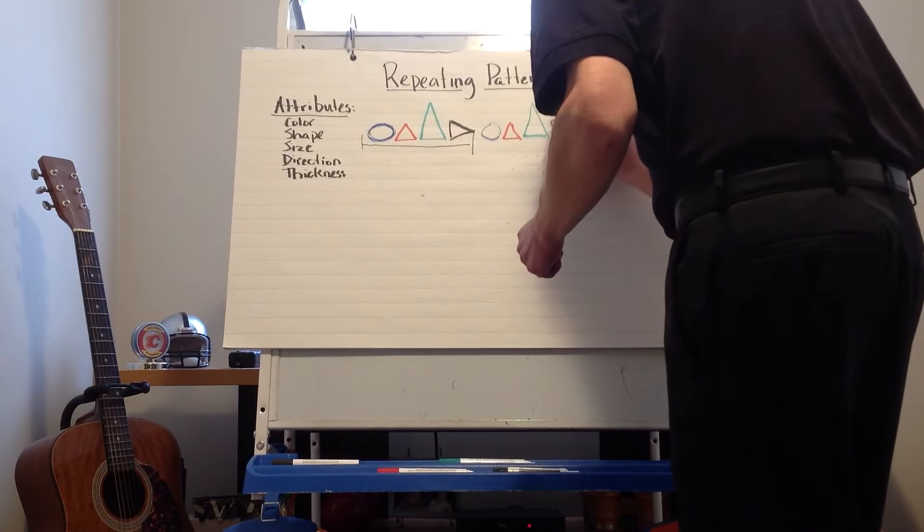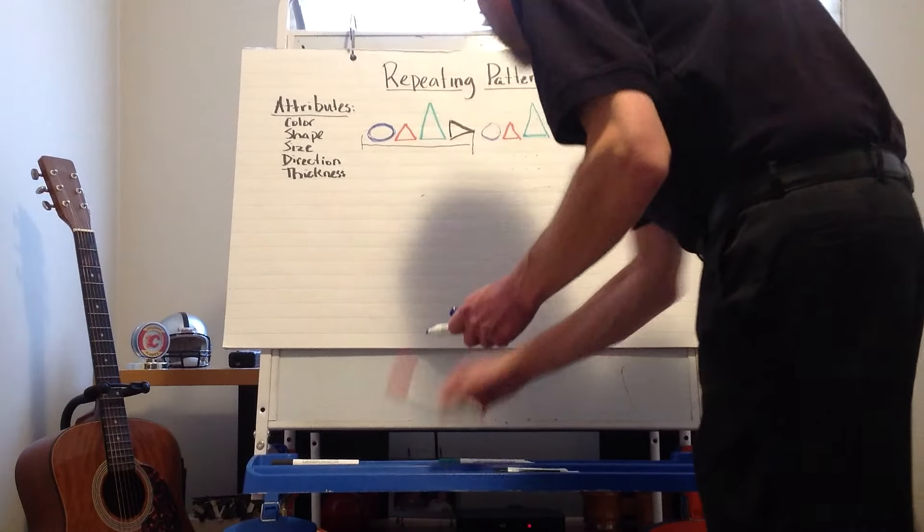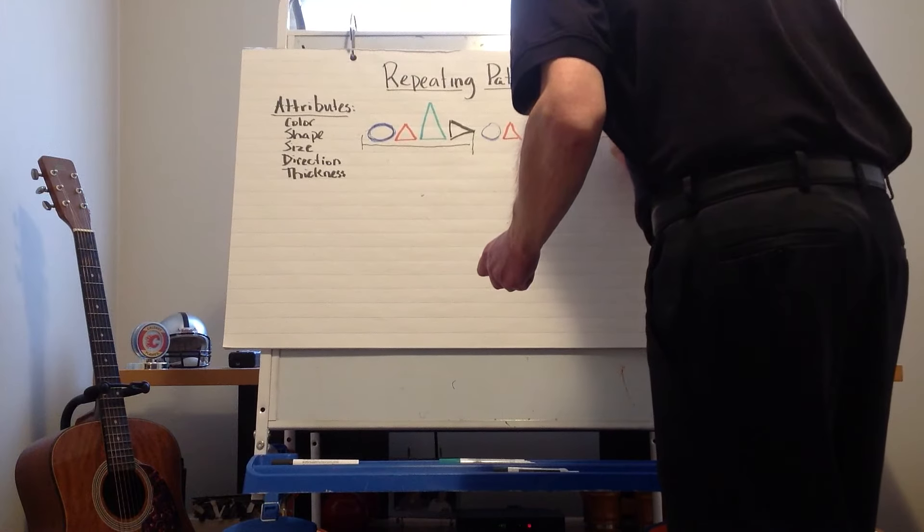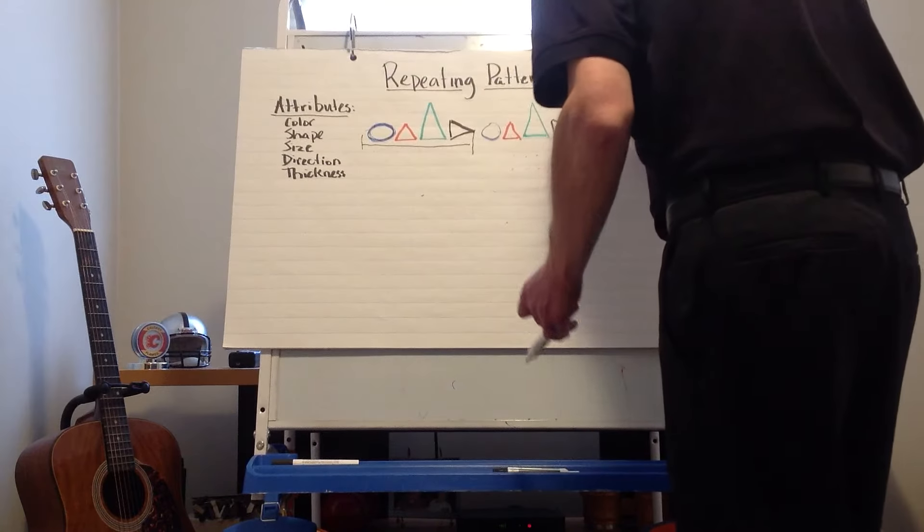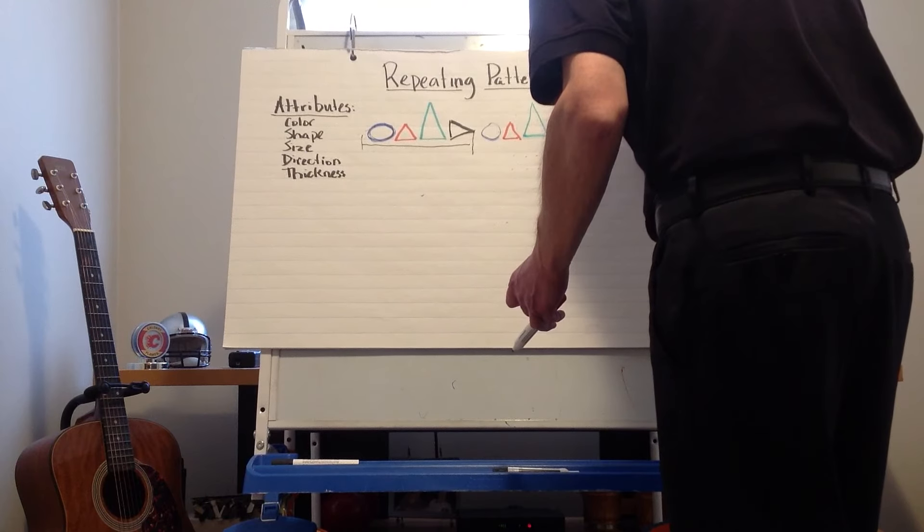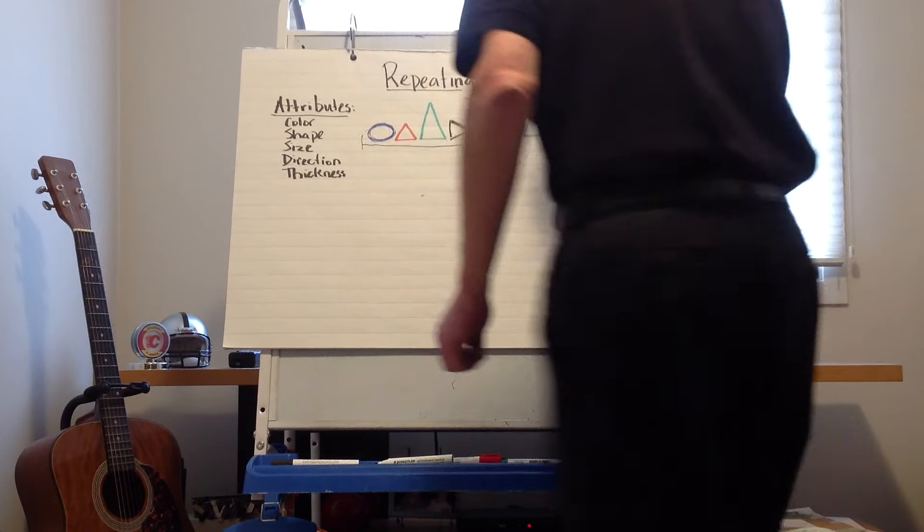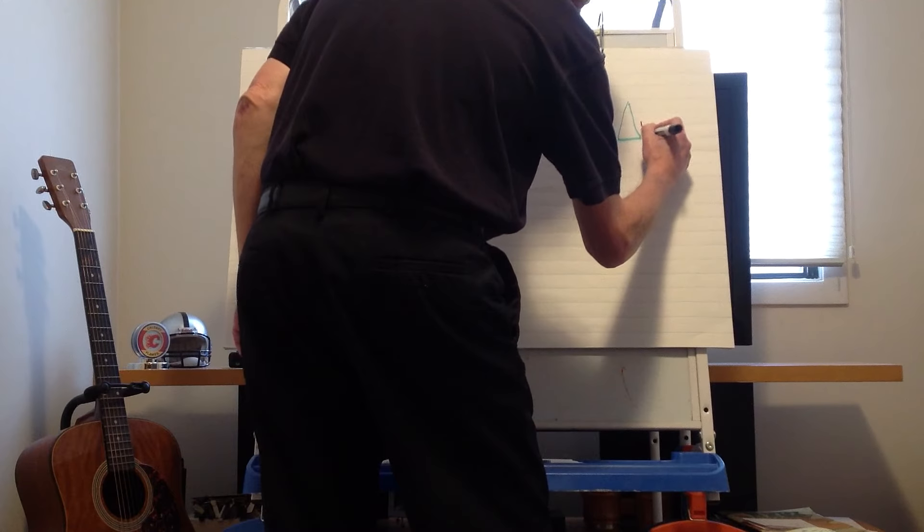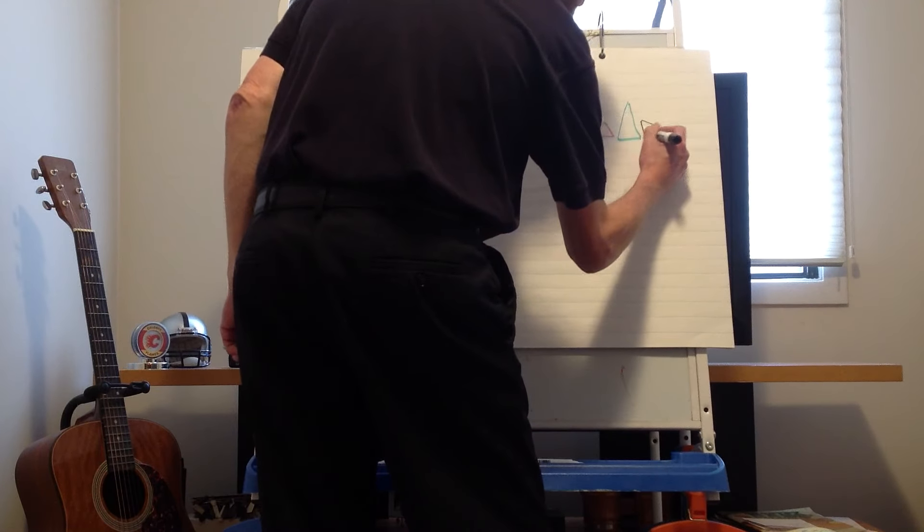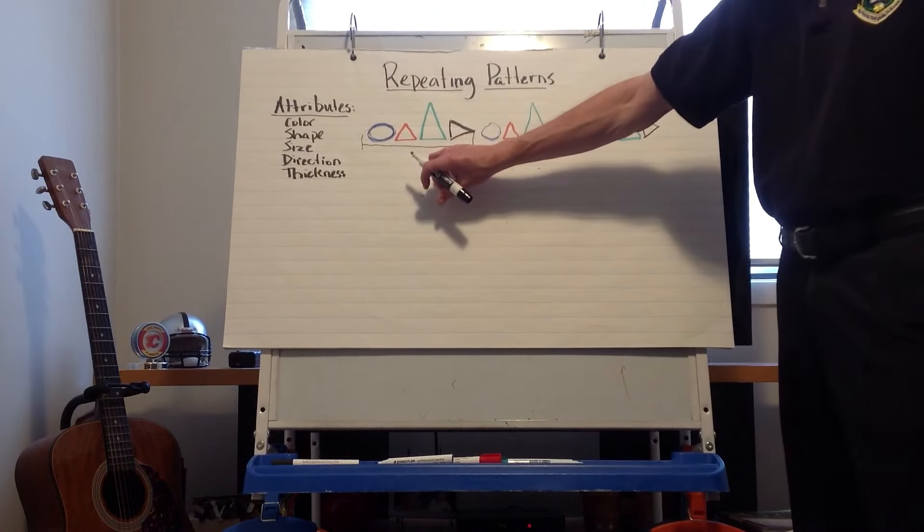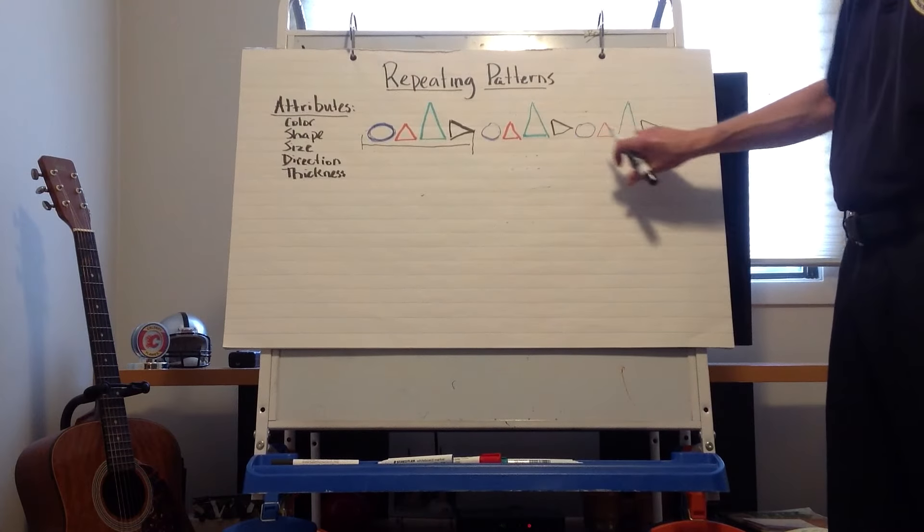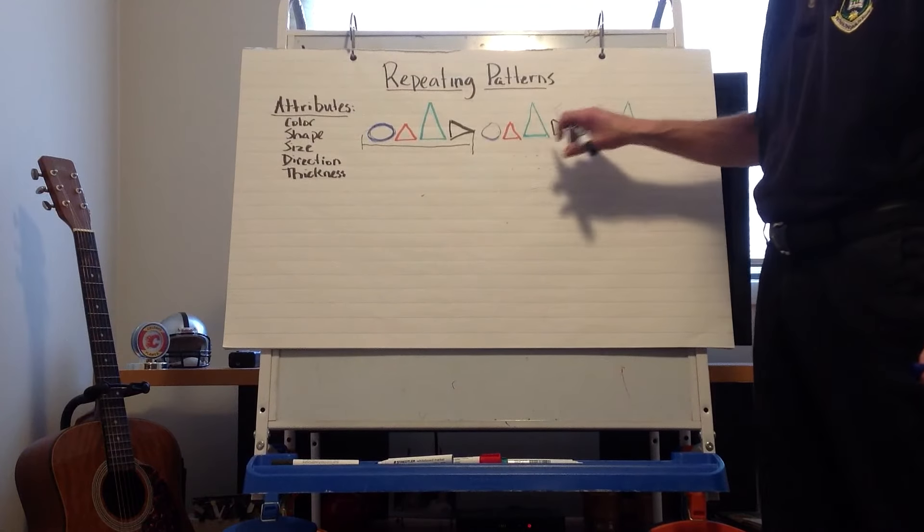So one more time. Circle, triangle, red triangle, big green triangle. And last but certainly not least is how we add direction. Do a sideways triangle. All right. So now I've underlined my core. I've done the set three times, or I've done three sets, excuse me.